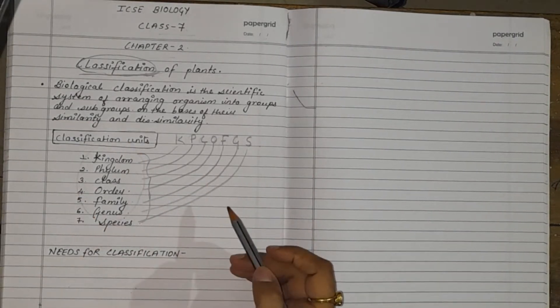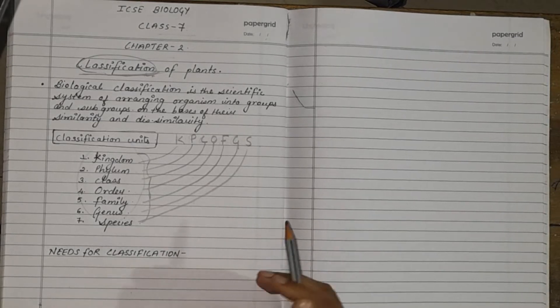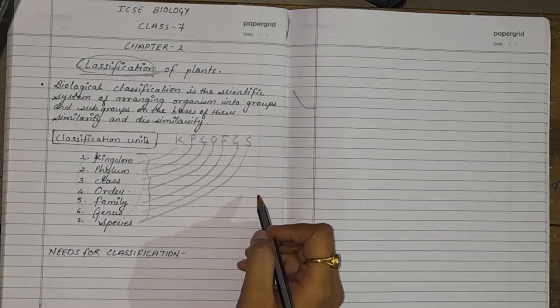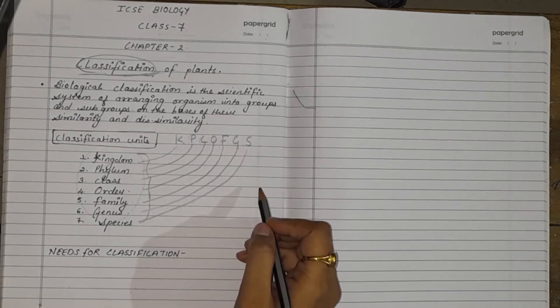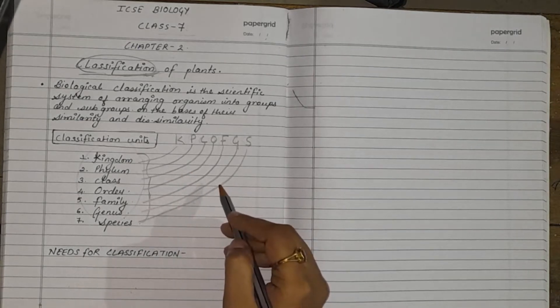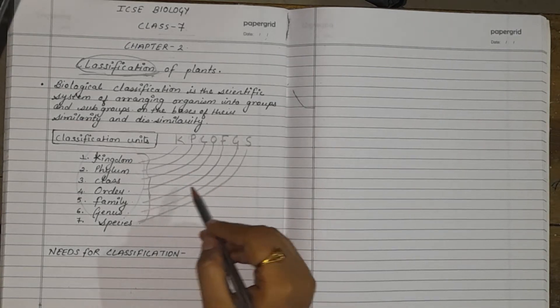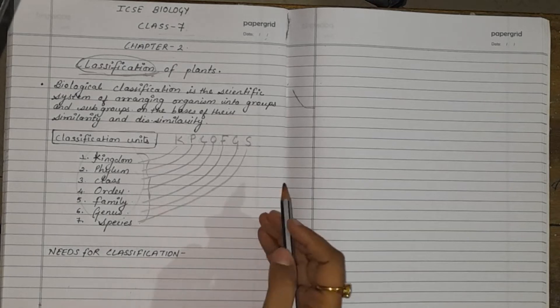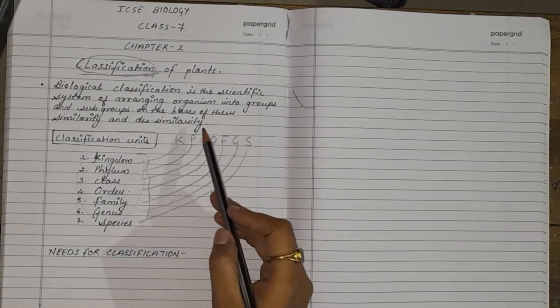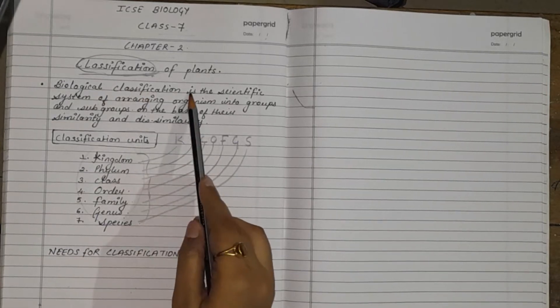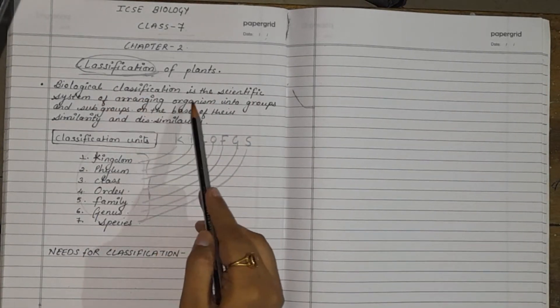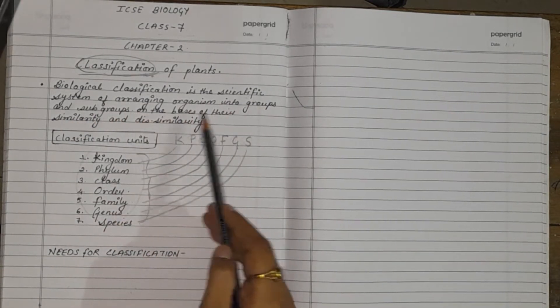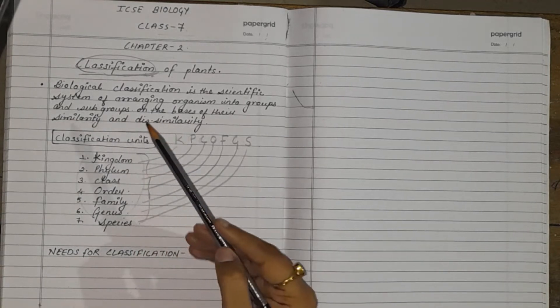Dear students, this sequence is given to deal with the study of a number of organisms present in the diversity. It is impossible to study each and every organism whenever they are not classified. So, the very first thing what is done to classify is we group the organism according to their similarities and dissimilarities. There comes the definition of classification. Biological classification is the scientific system of arranging organisms into groups and subgroups on the basis of their similarities and dissimilarities.